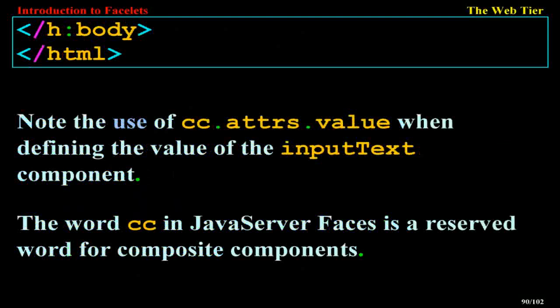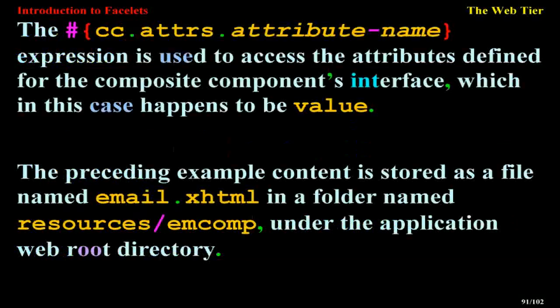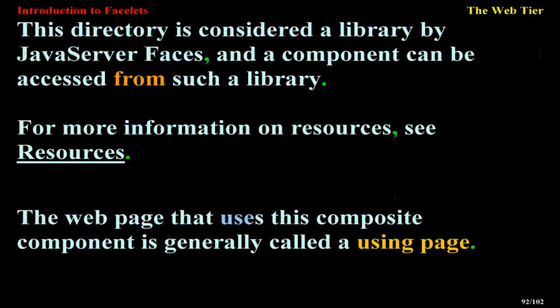Note the use of cc.attrs.value when defining the value of the input text component. The word 'cc' in JavaServer Faces is a reserved word for composite components. The cc.attrs attribute name expression is used to access the attributes defined for the composite component's interface — in this case, the 'value' attribute. The preceding example content is stored as email.xhtml in a folder named resources/imcomp under the application web root directory. This directory is considered a library by JavaServer Faces, and a component can be accessed from such a library.